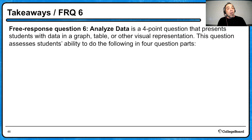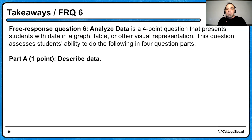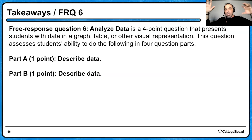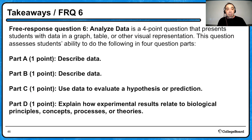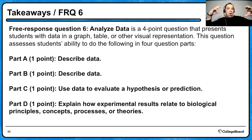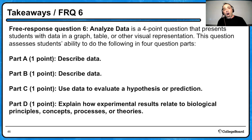FRQ 6 is free response question 6 — analyze data. It's a four-point question that presents students with data in a graph, table, or visual representation. It assesses your ability in four parts: A — describe data, looking for trends; B — describe data again, possibly two data sets; C — use data to evaluate a hypothesis or a prediction; and D — explain how experimental results relate to biological principles, concepts, processes, or theories. That last FRQ is all about the data. Practicing FRQs is very important because FRQs are 50% of the exam.